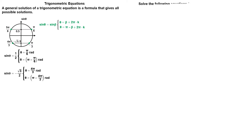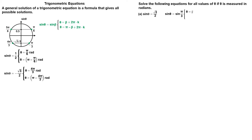Solve the following equation for all values of theta measured in radians: the sine of theta is equal to square root of 3 divided by 2. The reference angle is 60 degrees, or pi divided by 3 radians. We can write sine of theta is equal to sine of pi divided by 3. Sine is positive in quadrant 1 and quadrant 2. The general solutions are given as follows.